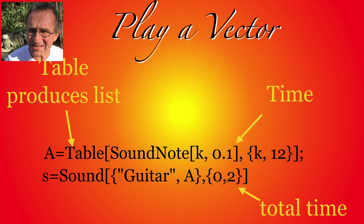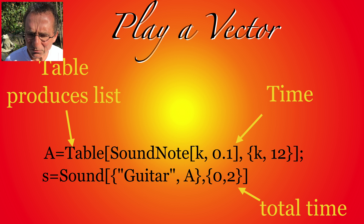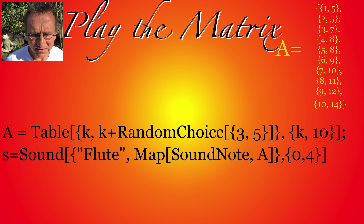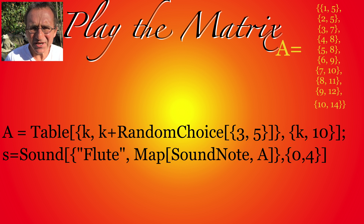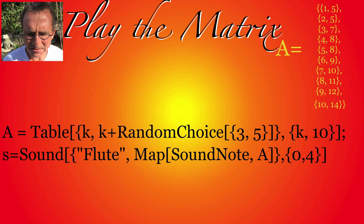We can also play the tones. In this case we have just a guitar playing the tone K from one to twelve, or play a matrix — so each row is a chord. And the flute plays these chords in sequence.